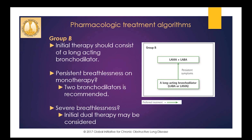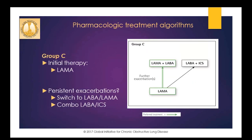For group B patients, they should initially be placed on a long-acting bronchodilator. There's no evidence to recommend one class over another for initial symptom relief; the choice should depend on the patient's perception of symptom relief. Options include LABAs such as salmeterol, formoterol, or olodaterol, or a LAMA such as tiotropium, aclidinium, umeclidinium, or glycopyrrolate. If patients remain symptomatic on one drug, add a drug from another class for dual therapy. For severe breathlessness, initial therapy with two bronchodilators can be considered. If adding a second bronchodilator doesn't improve symptoms, the guidelines now recommend reverting back to monotherapy.